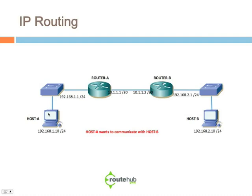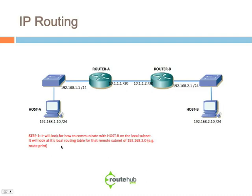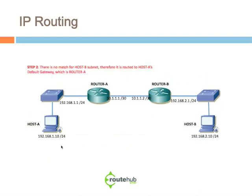In this example, host A wants to communicate with host B. Step one: router A will first look to see how it can communicate with host B on its local subnet. It's going to look at its local routing table and try to find a match for 192.168.2.0. On a Windows computer, you can go to the command prompt and type 'route print' to display that computer's routing table. If there is no match for host B's subnet, it will route to host A's default gateway, which is router A — configured with address 192.168.1.1.